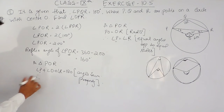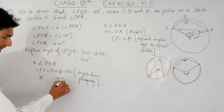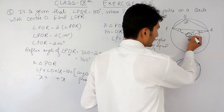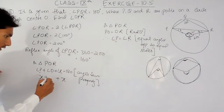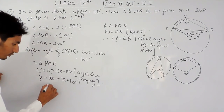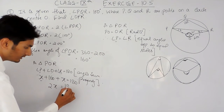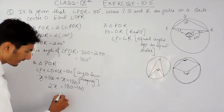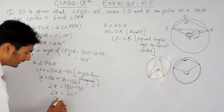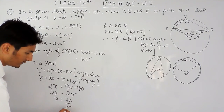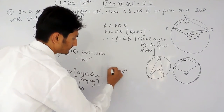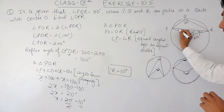Let angle P equal X and angle R equal X. The value of angle O in this triangle is 160 degrees. So X plus 160 plus X equals 180 degrees, giving us 2X equals 180 minus 160 equals 20 degrees. Therefore the value of X is equal to 10 degrees.